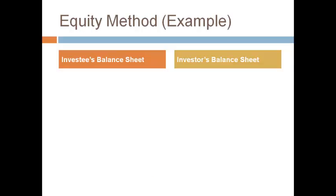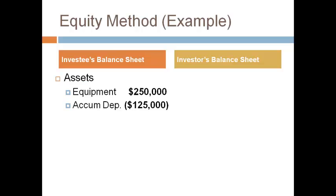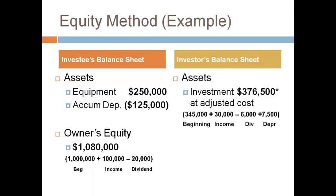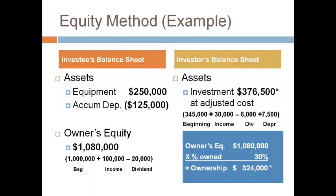The amounts reported on the investee's and the investor's balance sheet change with the events during the year. The investee reports a lower net asset and a higher owner's equity — income increases and dividends decrease their owner's equity. The investment account also changed to reflect the dividend, the income, and the investor's share of the difference in book value and fair market value related to the equipment. Notice that the investment balance of $376,500 does not equal 30% of the investee's owner's equity because the equipment difference still has a balance and goodwill is never eliminated.